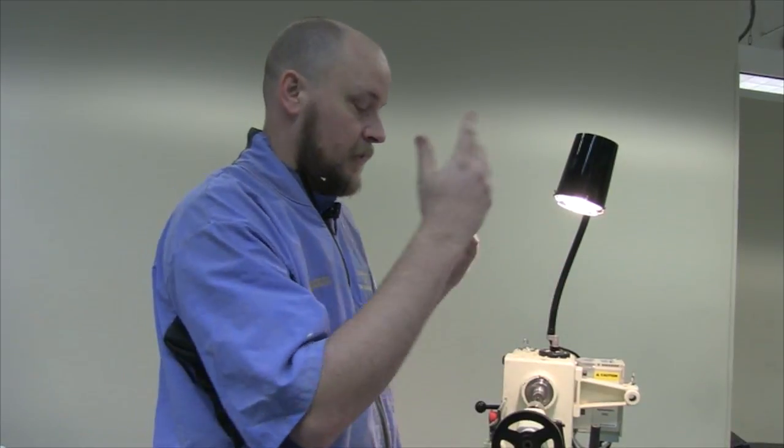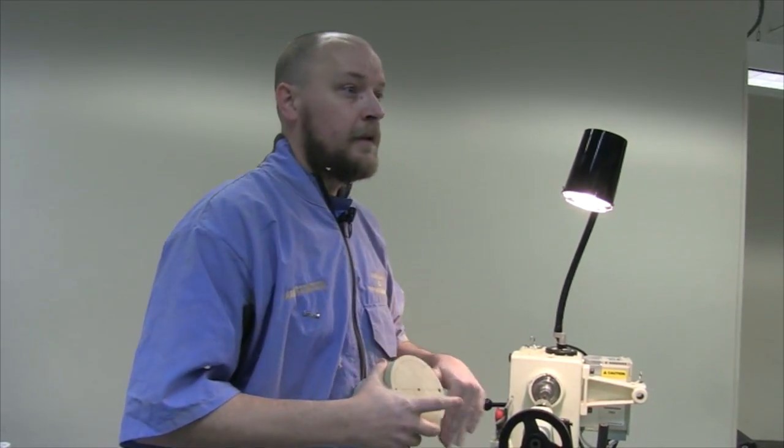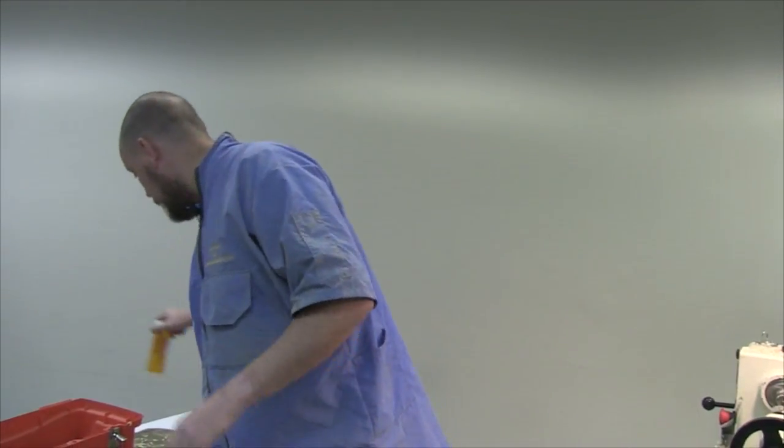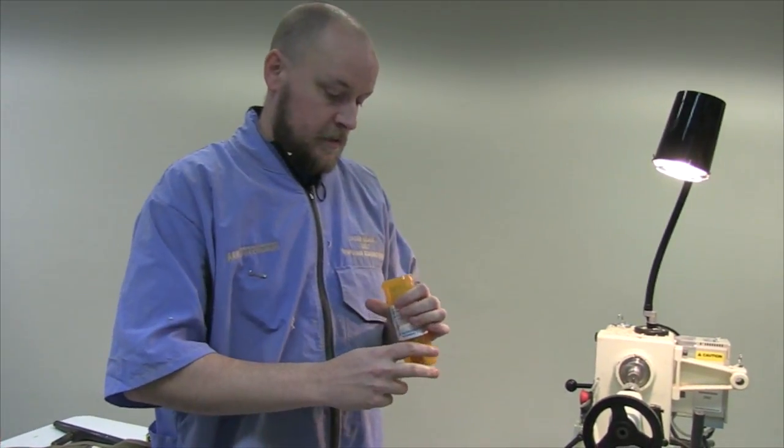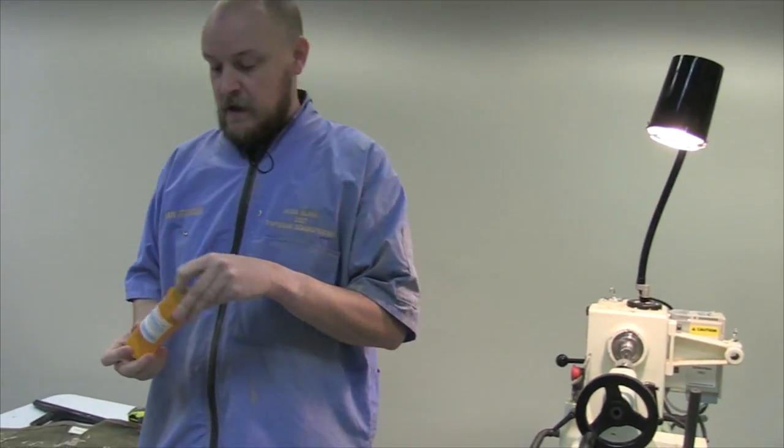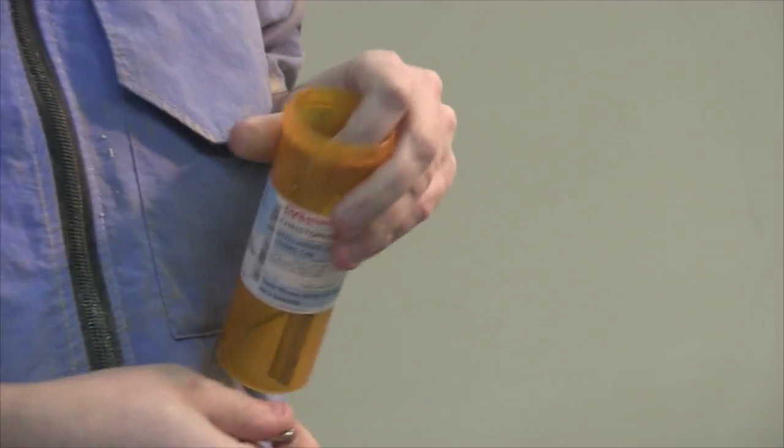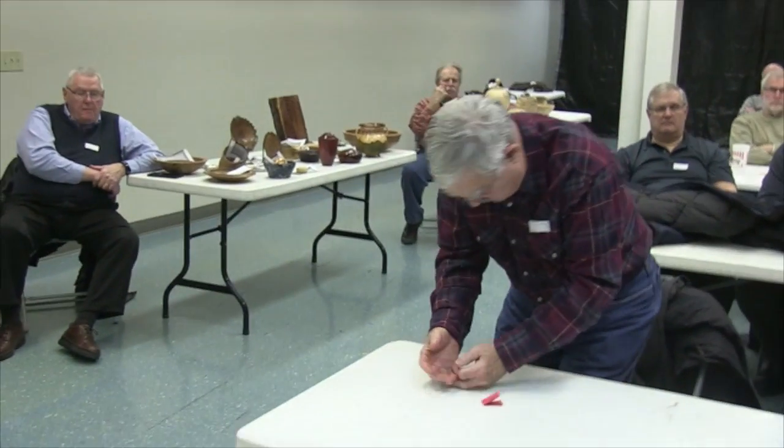That's the easiest way I figured out to make sure that everything lines back up - the grain lines up, everything lines up when the piece goes back together once you're finished. The magnets I got off the web. They're a quarter inch diameter, one sixteenth of an inch thick, little rare earth magnets.